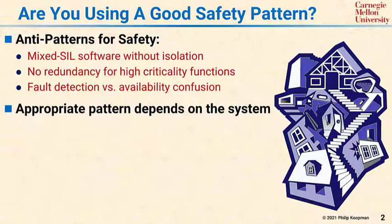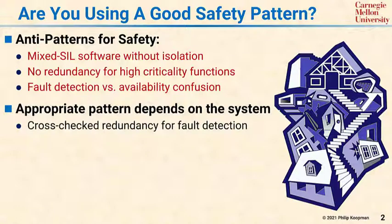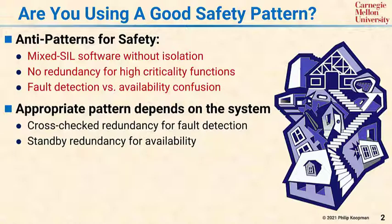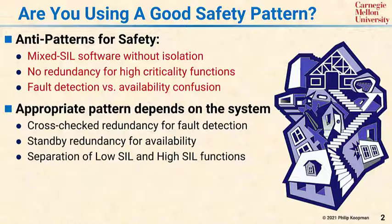The appropriate pattern for safety in your system depends on your particular application. However, there are some standard mechanisms and pieces that you can put together to assemble the right architecture for your system. The first piece is cross-checked redundancy, which can be used for fault detection. The next piece is standby redundancy, which can be used for availability. And the last piece is separation of high and low SIL functions, with each SIL having its own isolated CPU.